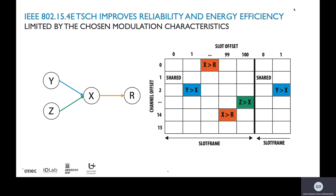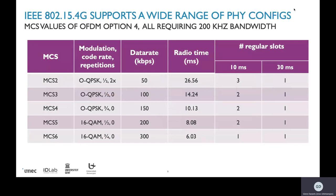If you have a link which is very short, you can pick a modulation which is very fast to have a very fast connection. Looking at all the different modulations, we consider the 15.4G amendment of the 15.4 standard, which introduced modulations like SUN-FSK, SUN-QPSK, and also OFDM options. In this table we show one particular OFDM option — option 4 — where all MCSs require a 200 kHz bandwidth but have different data rates, ranging from MCS2 at 50 kbps to MCS6 at 300 kbps.